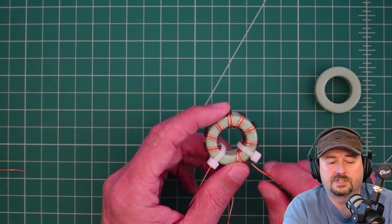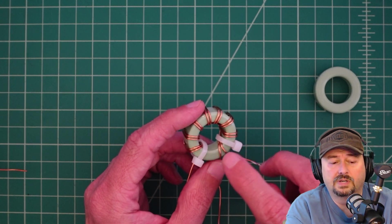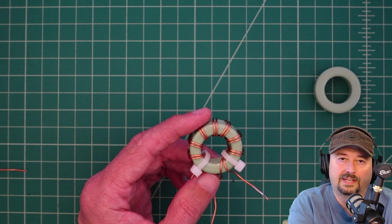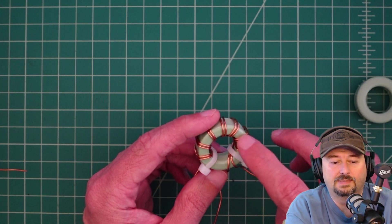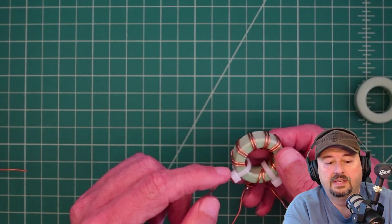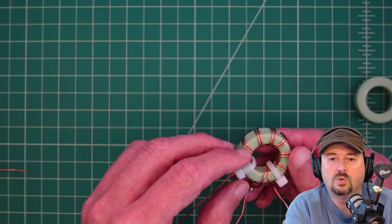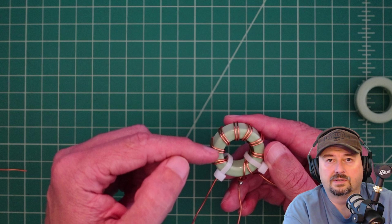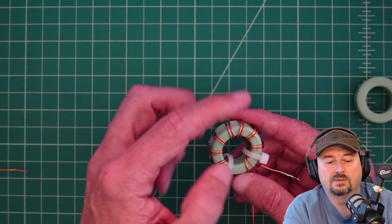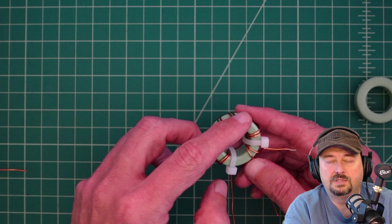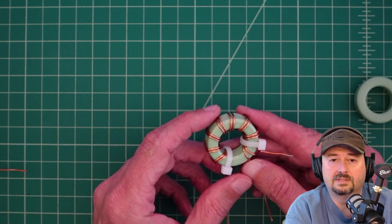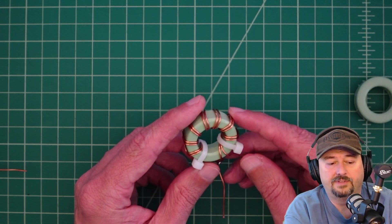A couple things I want to point out first. This is a powdered iron core, a T130 type 52. I don't want to get into all the specifics - I've got tons of videos about this core and why we chose it. What we do is take two wires, called a bifiler winding, and do eight turns onto this core. Eight times two is 16, so keep in mind it's actually 16 windings on the core, and we'll talk about that in a few minutes.